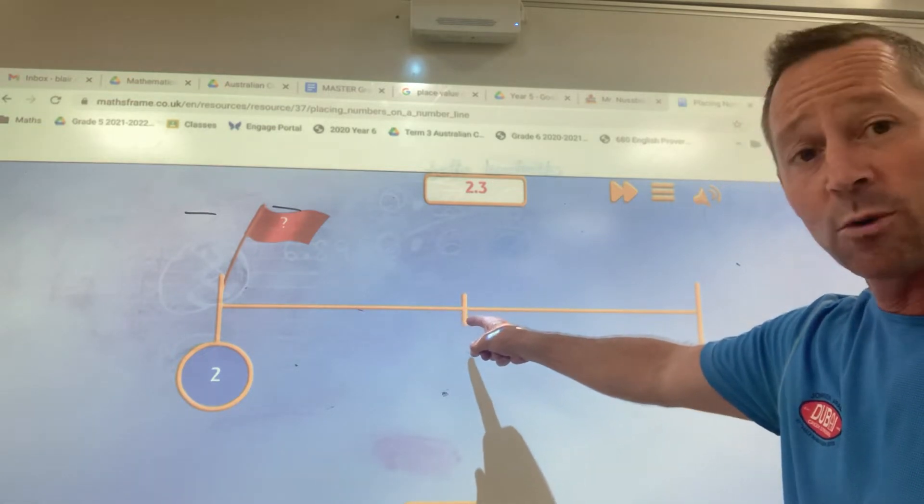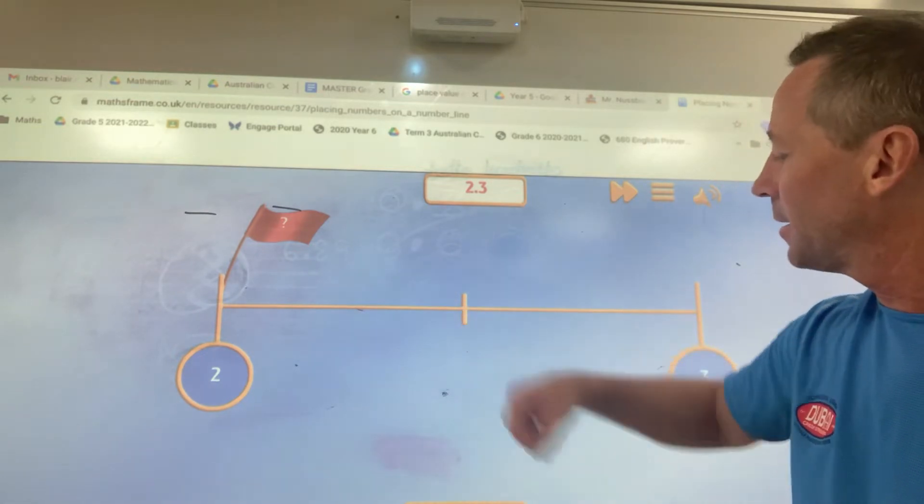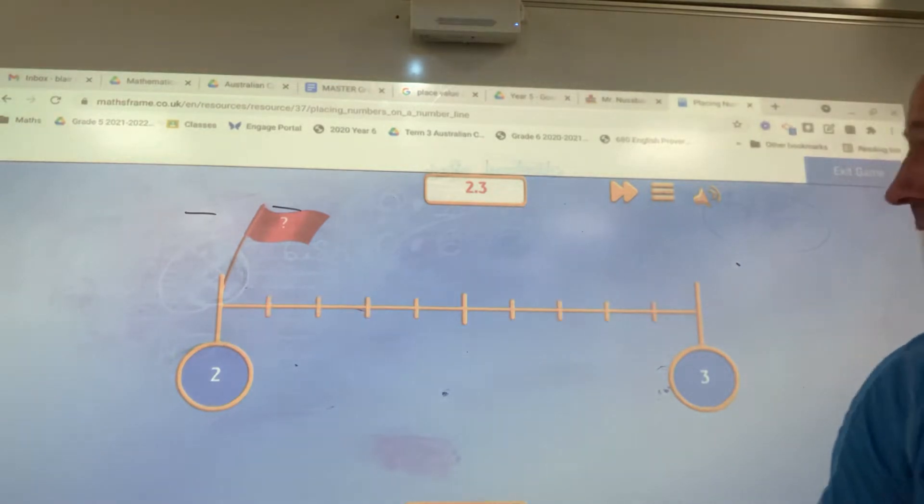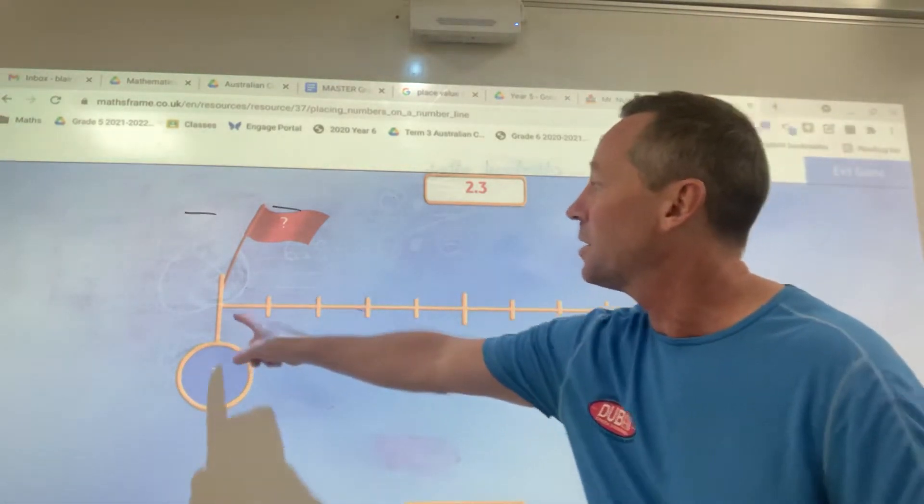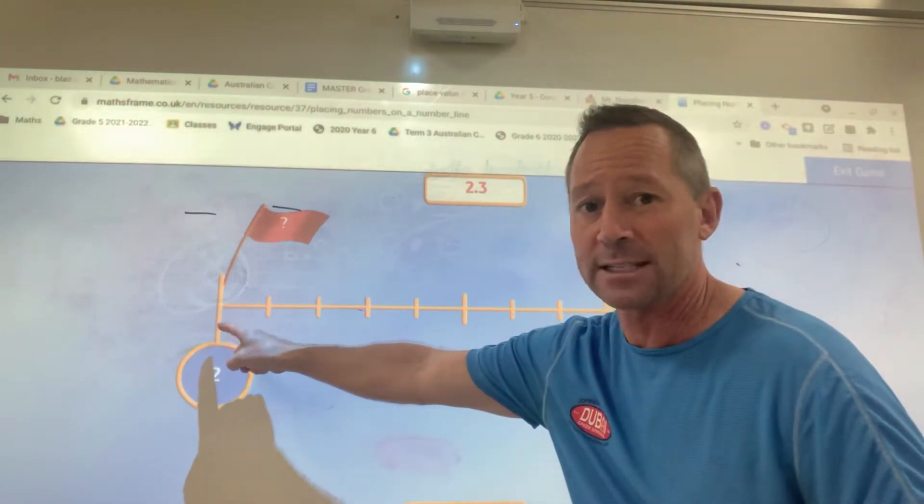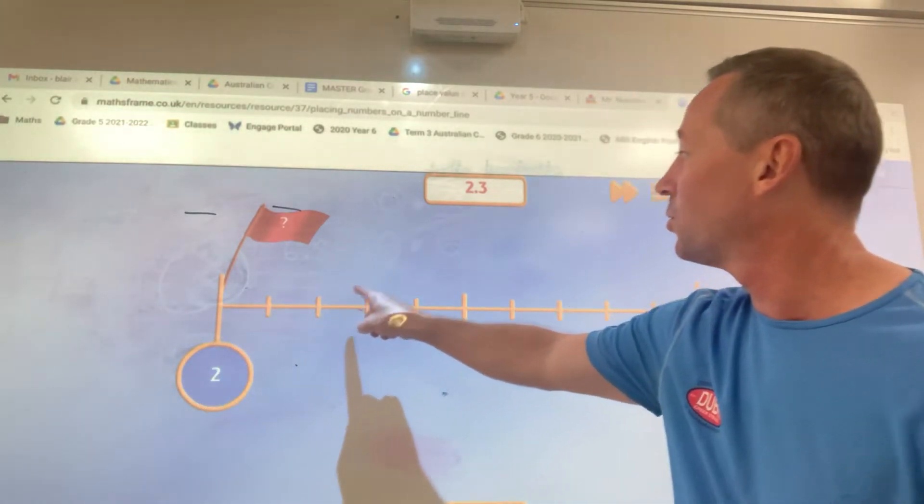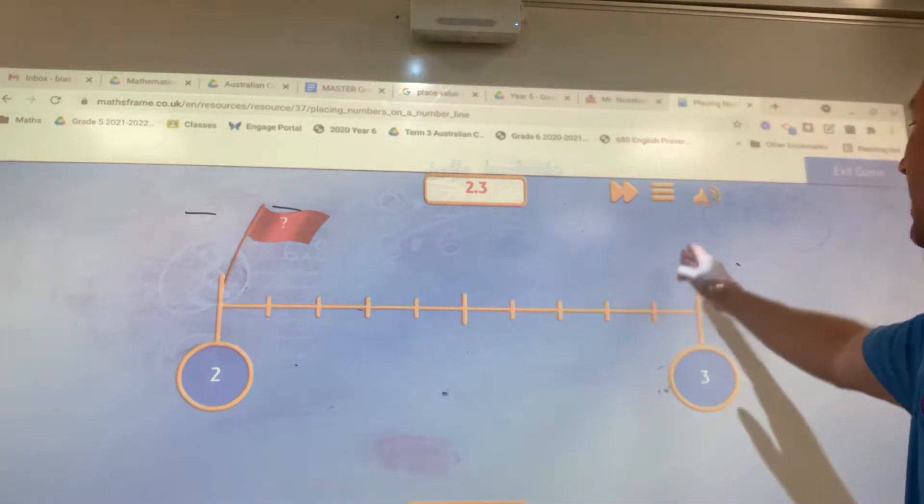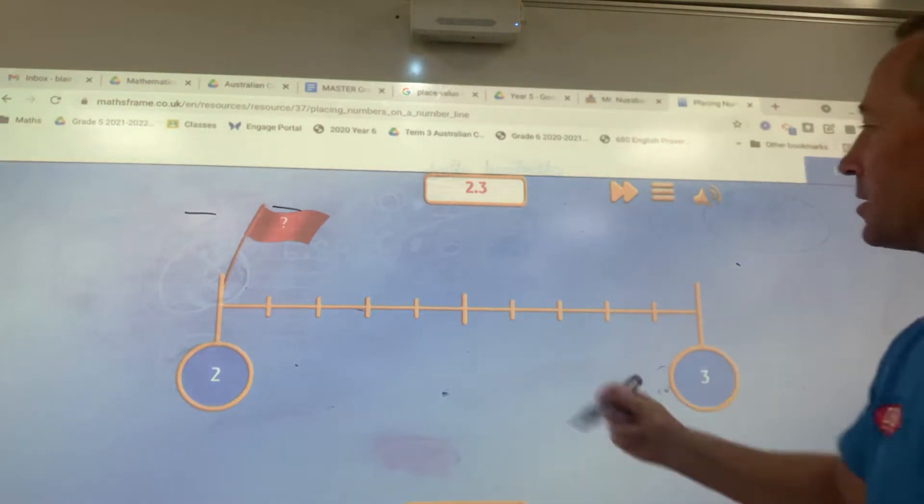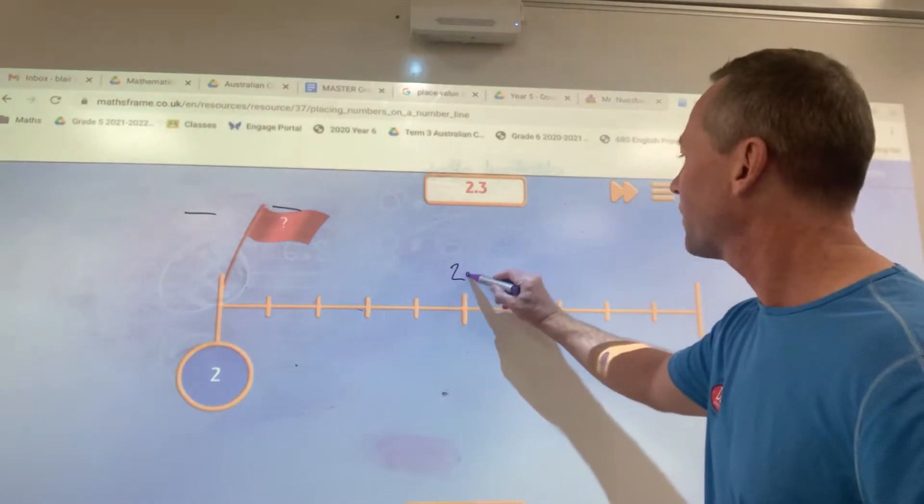Where would 2.3 go? If I get a little bit stuck, I can show these division parts that I've cut it into. From here, I don't say 1, I start at 0: 1, 2, 3, 4, 5, 6, 7, 8, 9, 10. So if I know 2.5 is there...